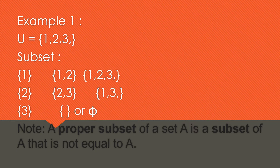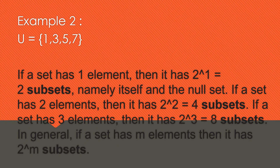Note: a proper subset of set A is a subset of A that is not equal to A. Example number two: U is equal to {1, 3, 5, 7}, the odd numbers from one to seven. If a set has one element, then it has two raised to one, which equals two subsets — namely itself and the null set.